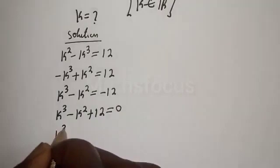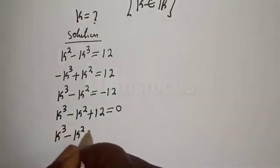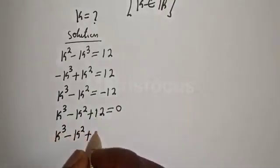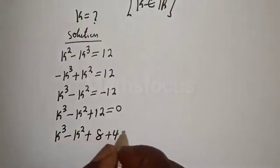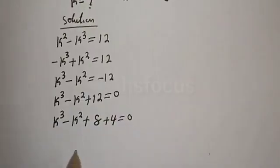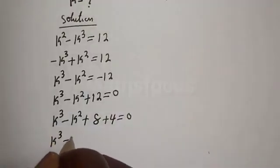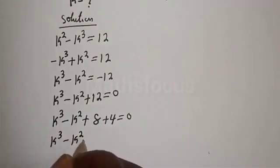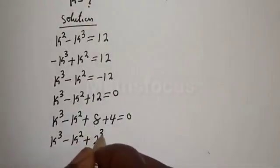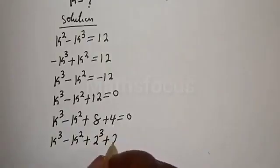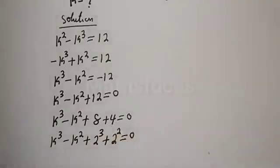k raised to power 3 minus k squared plus 12 can be written by splitting 12 as 8 plus 4. Here, k raised to power 3 plus 8 can be written as k raised to power 3 plus 2 raised to power 3, and 4 is 2 squared, giving us k raised to power 3 plus 2 raised to power 3 minus k squared plus 2 squared equal to 0.